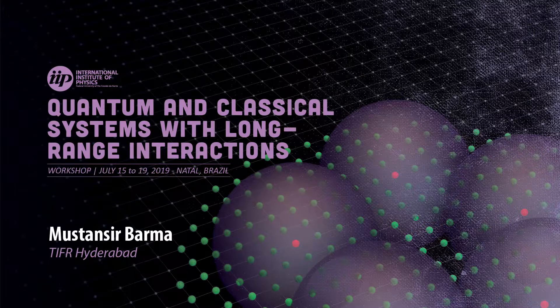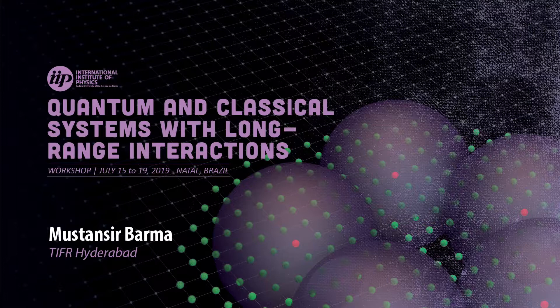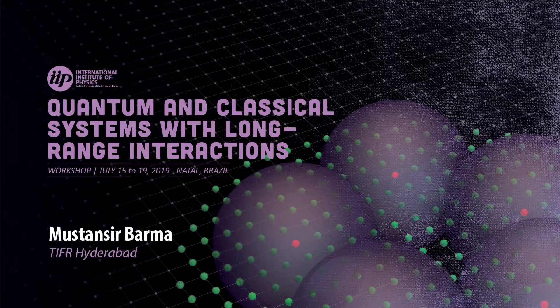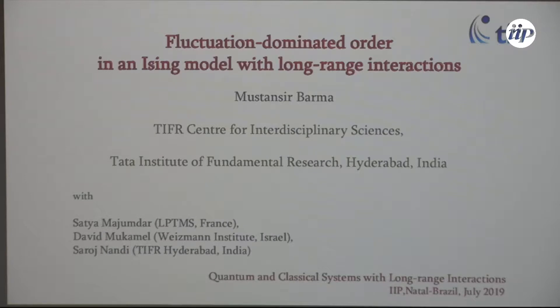I'd like to talk to you about something that's called fluctuation dominated order. It's a phrase for something very definite which I will try to explain to you, and I'll show you a calculation which shows that this sort of order arises in an Ising model with power law decaying interactions.